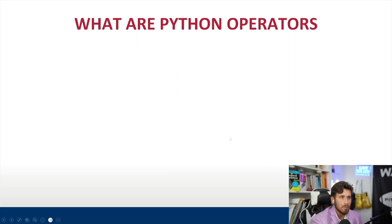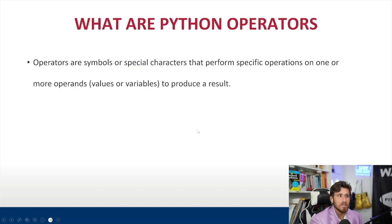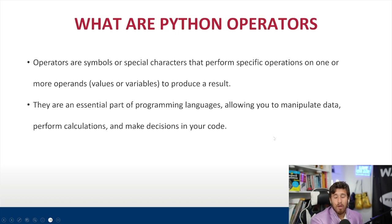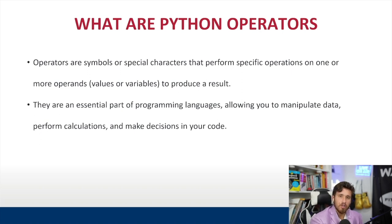So what are operators in Python? They're expressions or special characters that perform specific operations on one or more variables, numbers, strings, etc., and they produce a specific result. They're essential to every part of programming languages — they allow you to manipulate data and are fundamental to writing code. You may have seen us do some addition and string concatenation in earlier lectures; now we're going to explain how to actually do these and why they work.